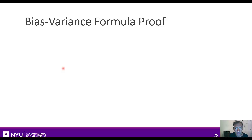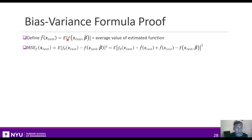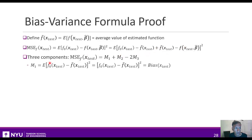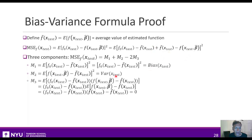We can walk through the bias-variance proof quickly. Let F-bar be the average value of the estimate. The function MSE can be written as the difference between F0 and F, which we break into three components. The first term is the bias squared, the second term is the variance, and the cross term — which I won't detail fully here — turns out to be zero.